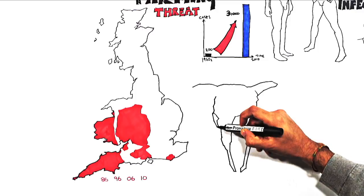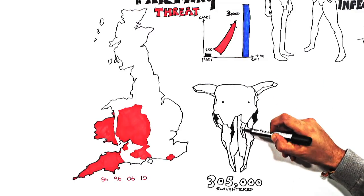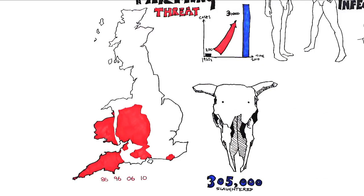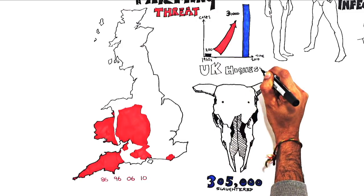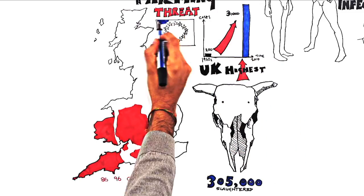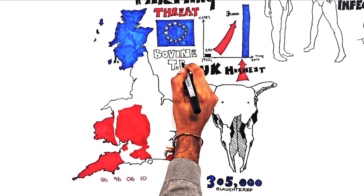Consequently, over the last ten years, more than 305,000 otherwise healthy cows were slaughtered as a precaution against the spread of infection. The UK now has the highest level of bovine TB in the EU, whilst many other EU countries and Scotland are officially bovine TB free.